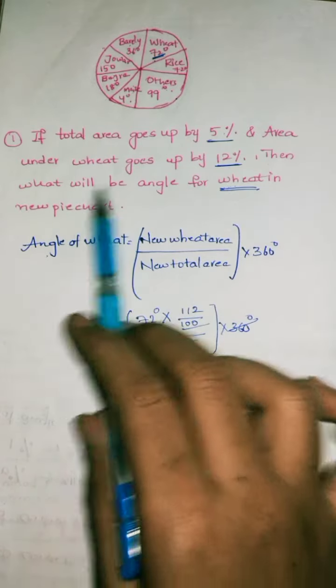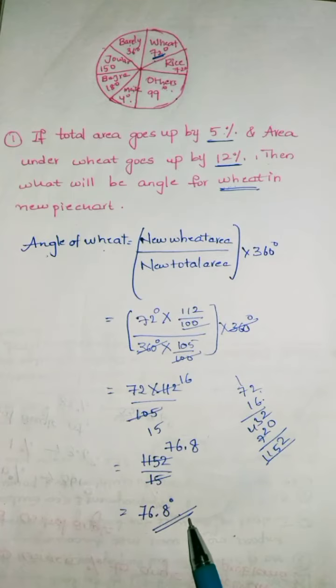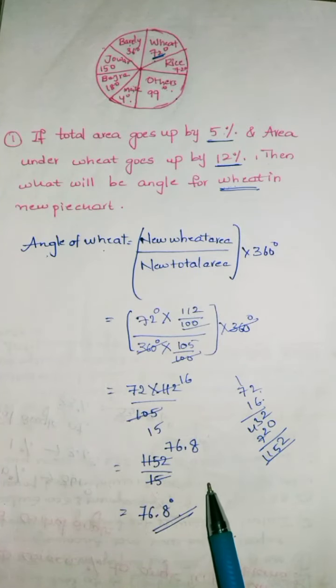What will be the angle for wheat in the new pie chart? It is 76.8 degrees. I felt this problem as difficult in the set of questions, that's why I discussed it. For more problems related to data interpretation, arithmetic and other topics, please subscribe to my channel. Thank you.